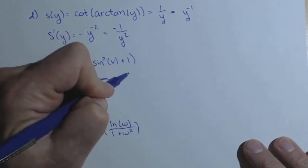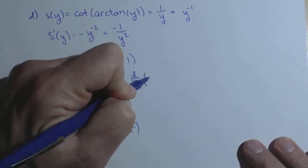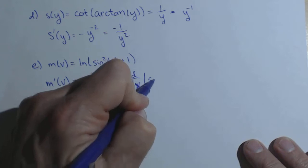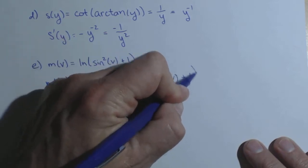times the derivative with respect to v of what we left alone, the sine squared of v plus one.